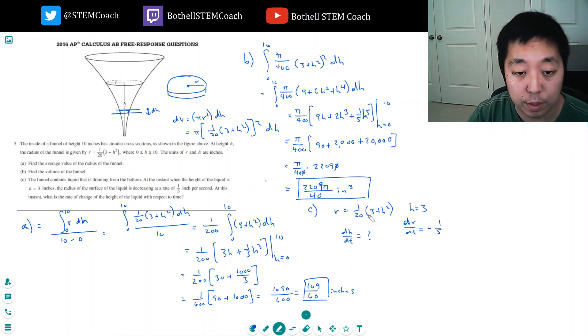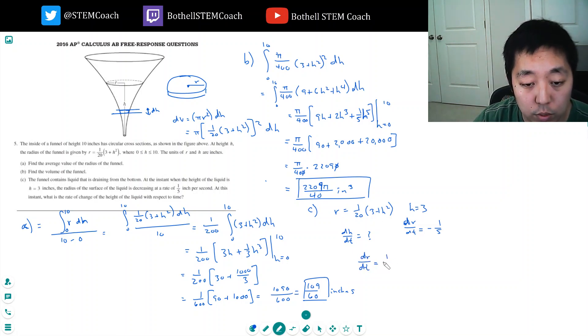Now to do that, I'm going to take the derivative of both sides of this equation. I get dr/dt equals 1/20th times the derivative of this, the derivative of 3 is zero, 2h times dh/dt. The dh/dt is really chain rule coming out.